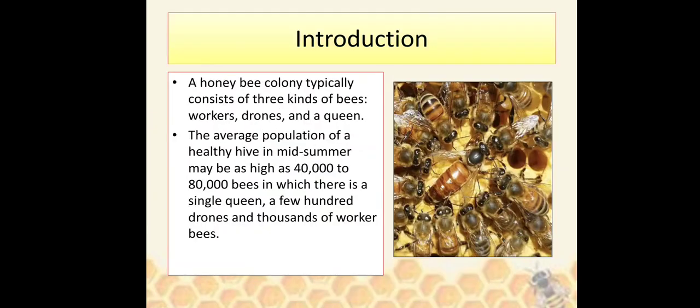A honeybee colony typically consists of three kinds of bees: workers, drones, and a queen. The average population of a healthy hive in mid-summer may be as high as 40,000 to 80,000 bees, in which there is a single queen, a few hundred drones, and thousands of worker bees.